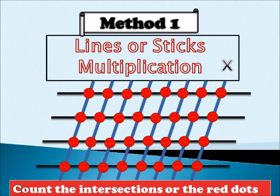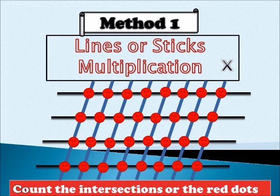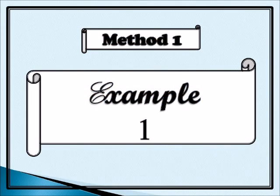So over here you can see we have one, two, three, four, five, six, seven, eight lines. And here by row we have one, two, three, four. That means eight times four. Then you count all the red dots — eight times four — and that will help you to arrive at your answer.